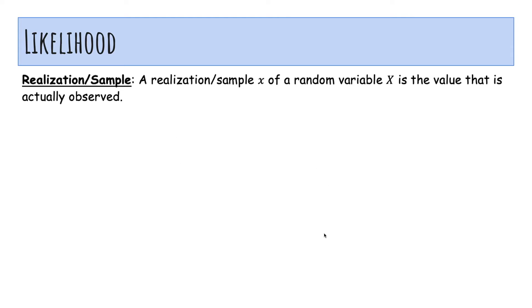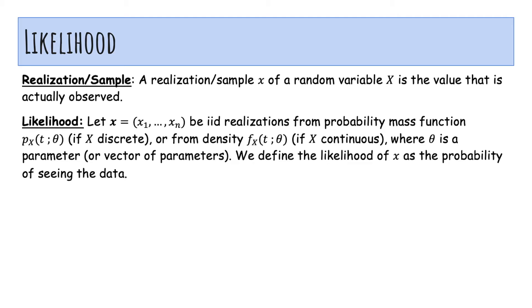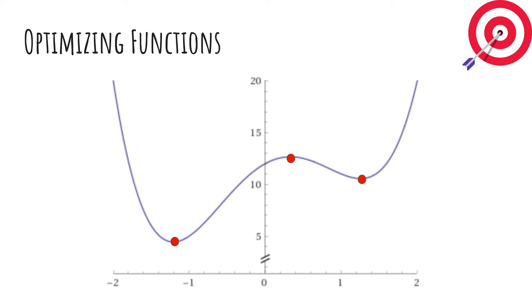So first, a sample or realization of a random variable X is the value that's actually observed. For Bernoulli, it'll be 0 or 1. For geometric, it'll be some positive number from 1 with no upper bound. The likelihood of x, of the data x, is the probability of seeing the data. So for discrete random variables, the likelihood is the product of the probability that you see x1, x2, all the way to xn. For continuous random variables, it's the product of the density functions. And I want you to take a second and think about why we are allowed to multiply these densities, because the probability of seeing all the data will be 0, because the probability of equaling a particular value is always 0.